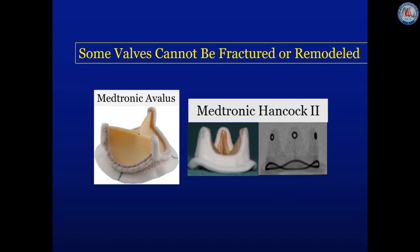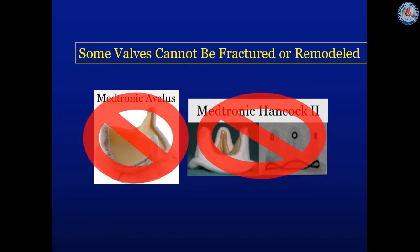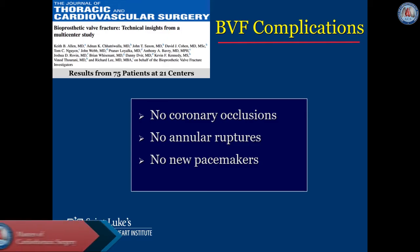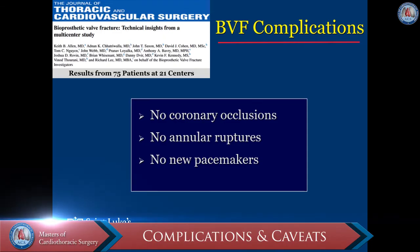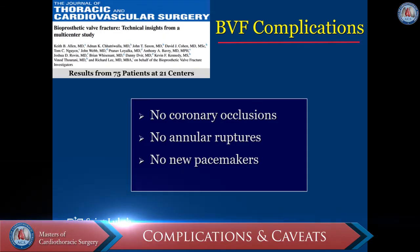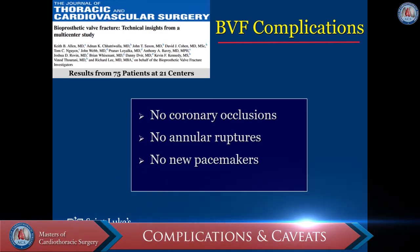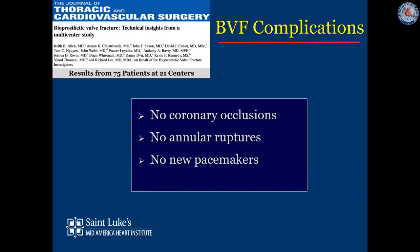Some valves can't be fractured, bent, or stretched — these include the Medtronic Avalus and the Medtronic Hancock II. Obviously there will be complications in this high-risk population, but in our 75-patient, 21-center multicenter evaluation, there were no coronary occlusions, no annular ruptures, and no new pacemakers.